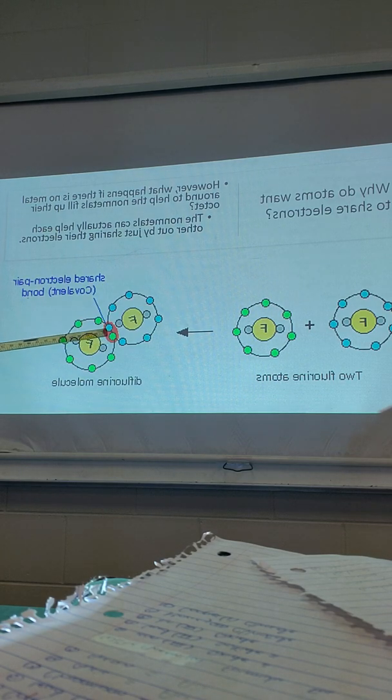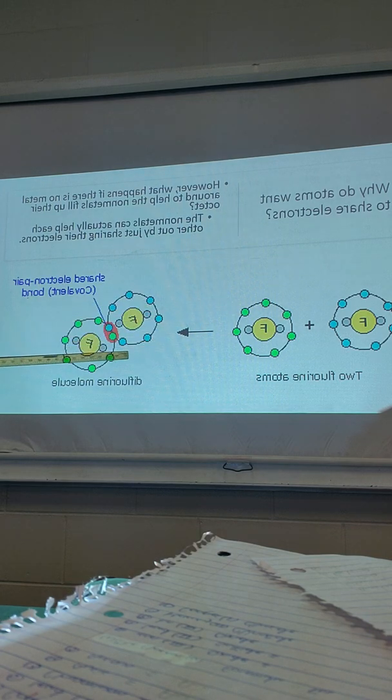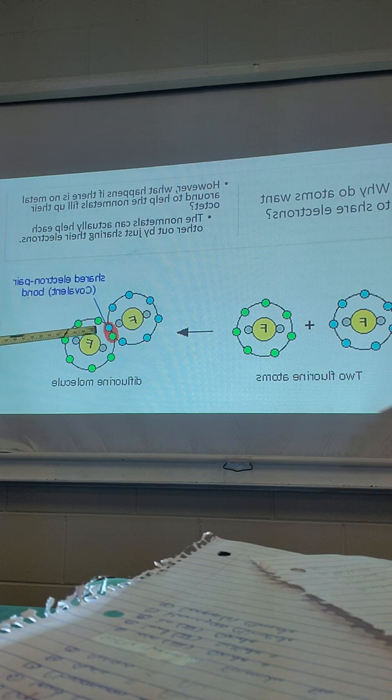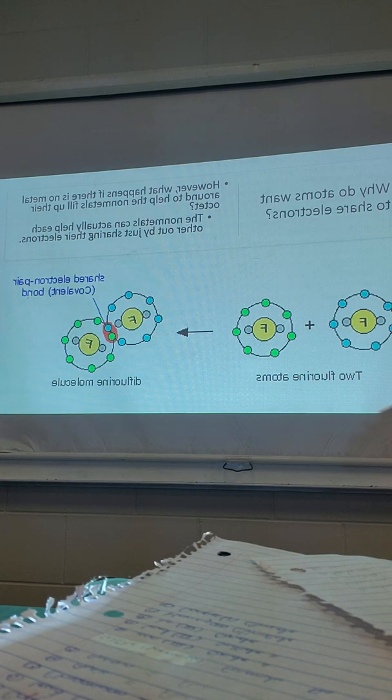When they share them, you can count these electrons for both atoms. So now fluorine has eight, and this fluorine has eight. That overlap where these electrons are being shared is called the covalent bond.